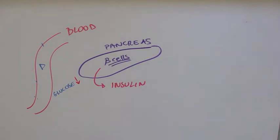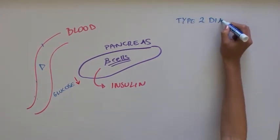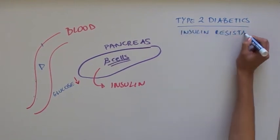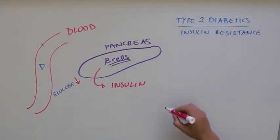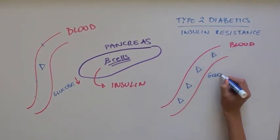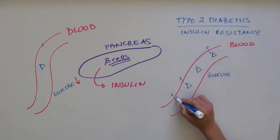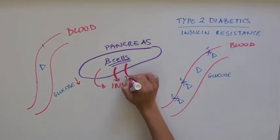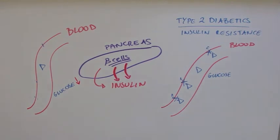So what happens in type 2 diabetic patients? Well, these patients experience something called insulin resistance. This happens when the body cannot properly use the insulin to store away glucose. As a result, glucose accumulates and the beta cells in the pancreas keep secreting more and more insulin to try and lower the blood glucose level.